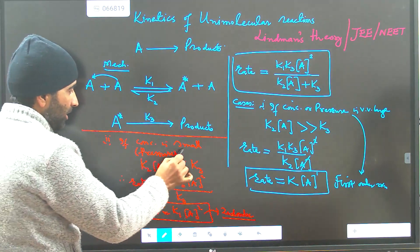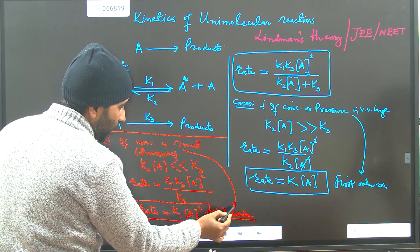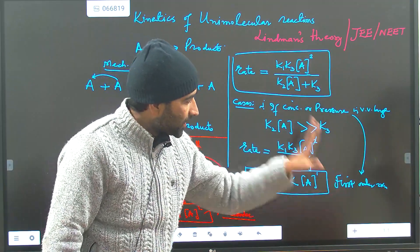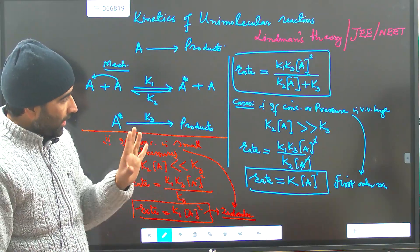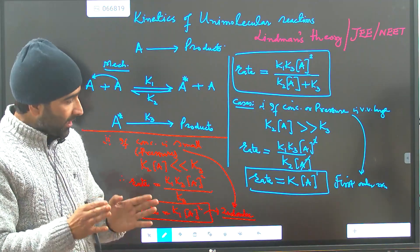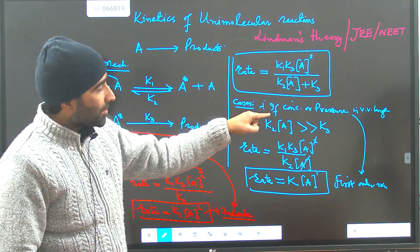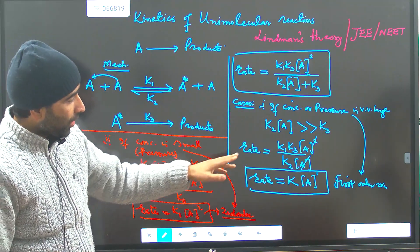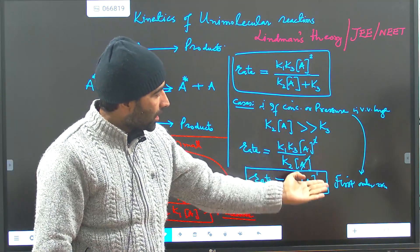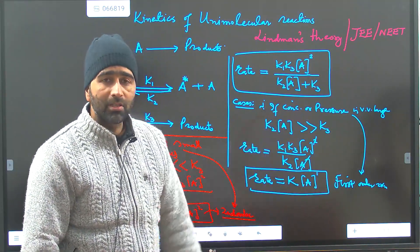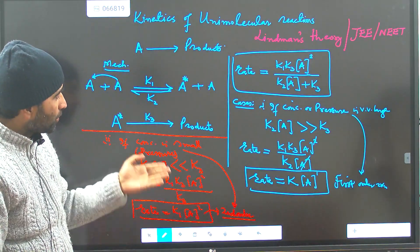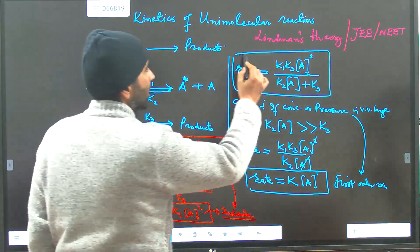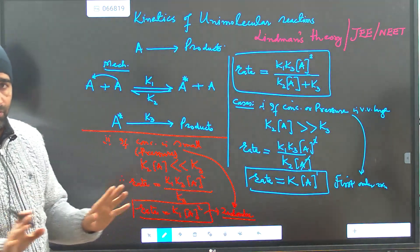In summary: if the concentration or pressure is very very small, the reaction follows second order kinetics. If the concentration or pressure is very very large, the reaction follows first order kinetics. The order of the reaction depends on external conditions — changing pressure or concentration also changes the order. For intermediate concentrations or pressures, you can use the full Lindemann rate equation directly. This is all about Lindemann's theory. You can now solve numericals. Thank you.